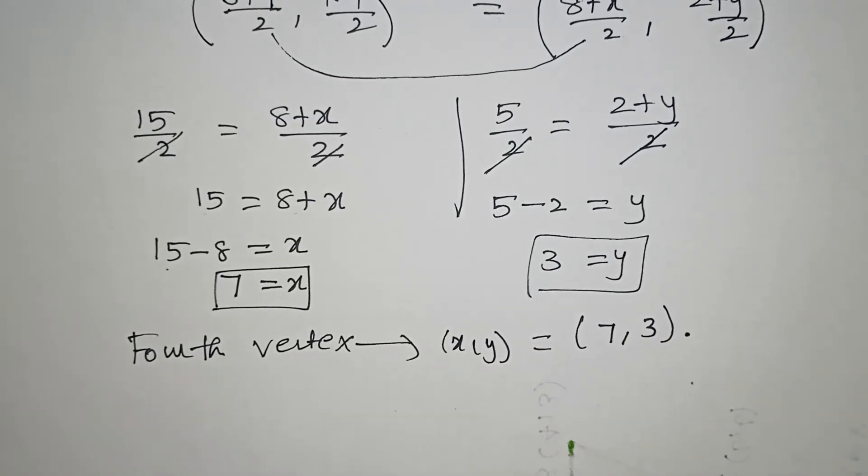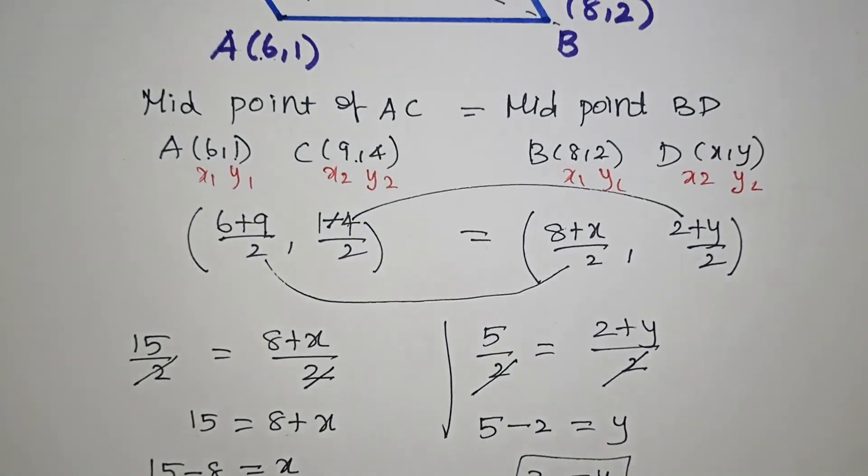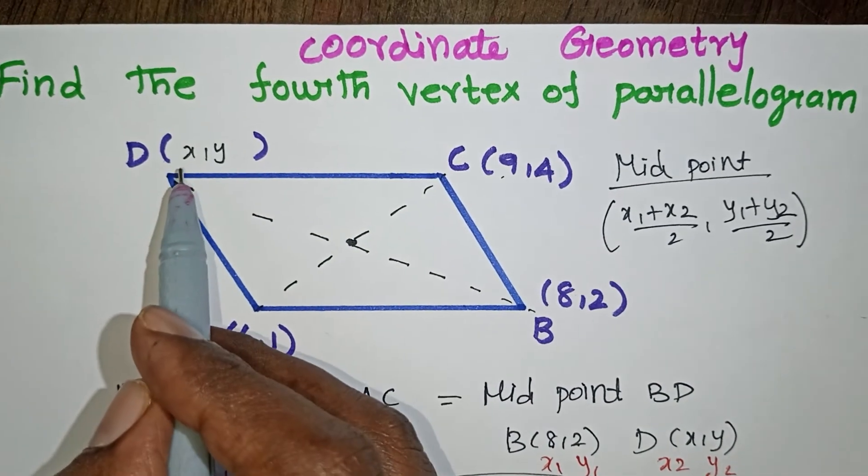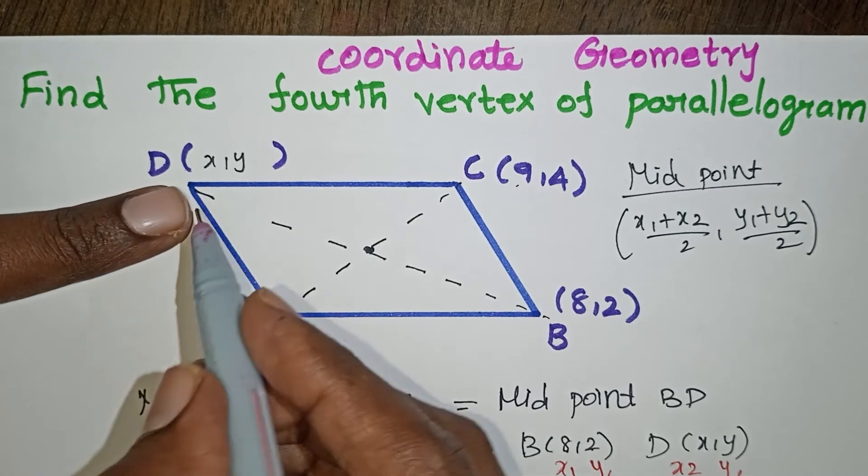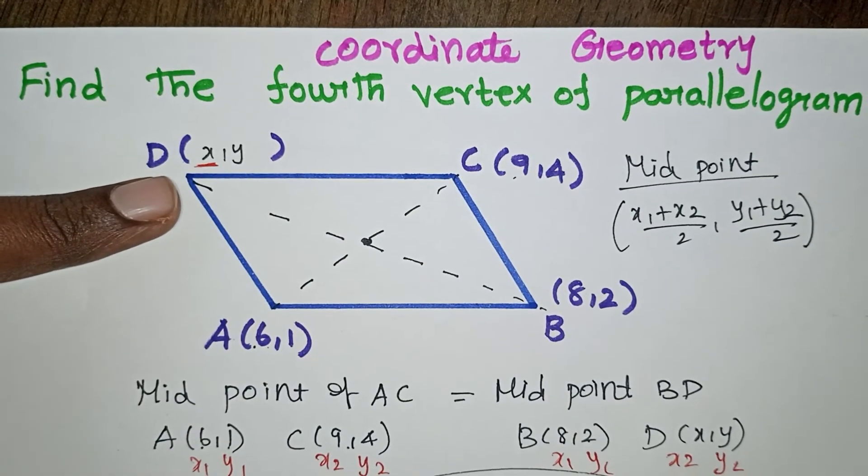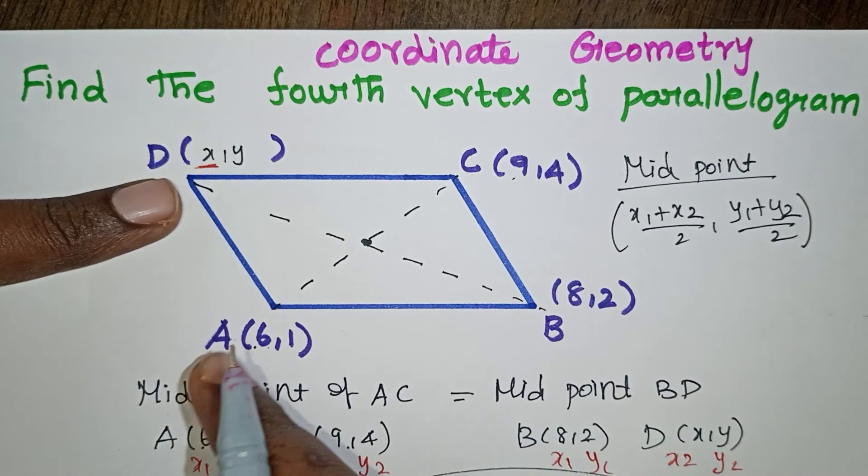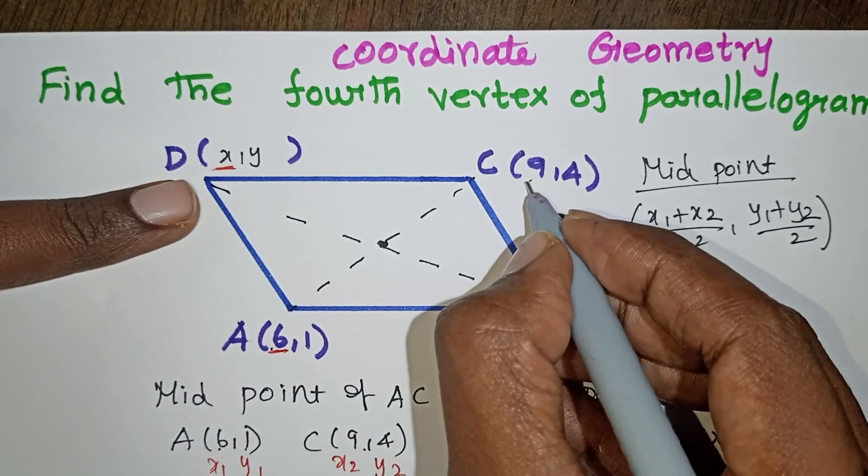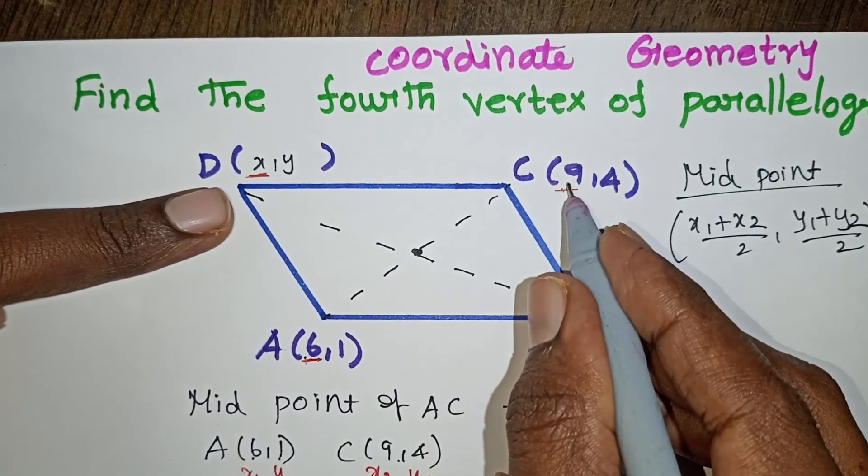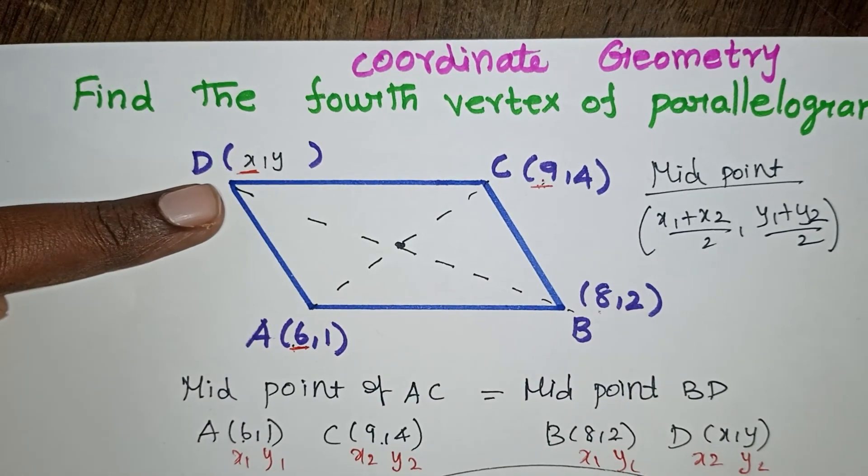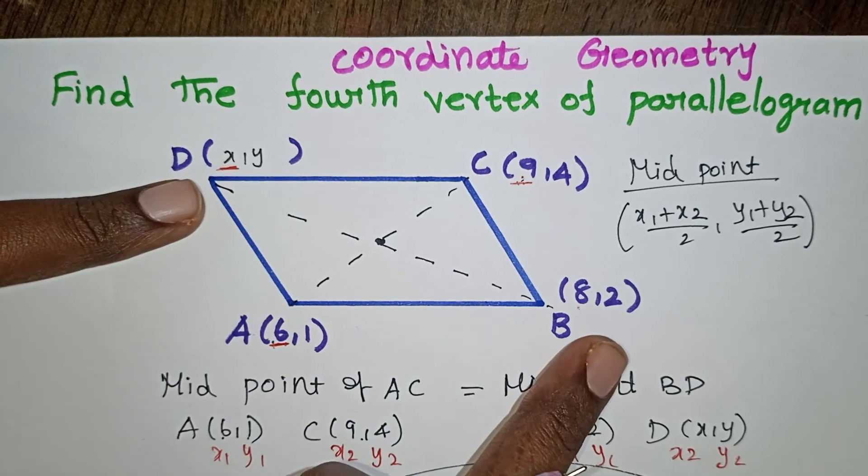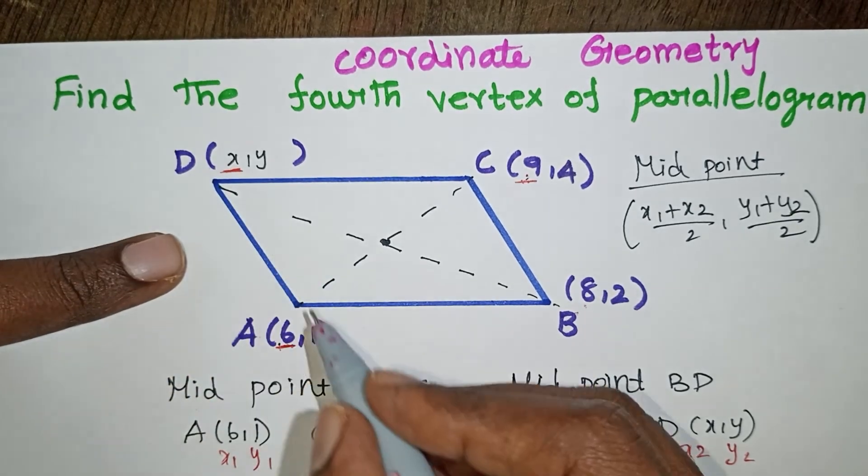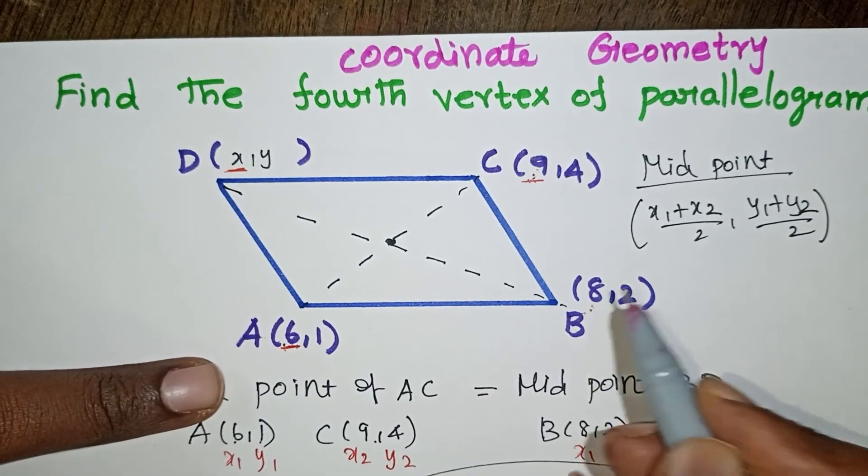This is the usual way to find the fourth vertex. We have a shortcut also to find it directly. To get the X value, take all the X coordinates from the three vertices. Add the two adjacent ones: 6 plus 9 is 15, then subtract the opposite vertex coordinate 8. So 15 minus 8 gives 7.